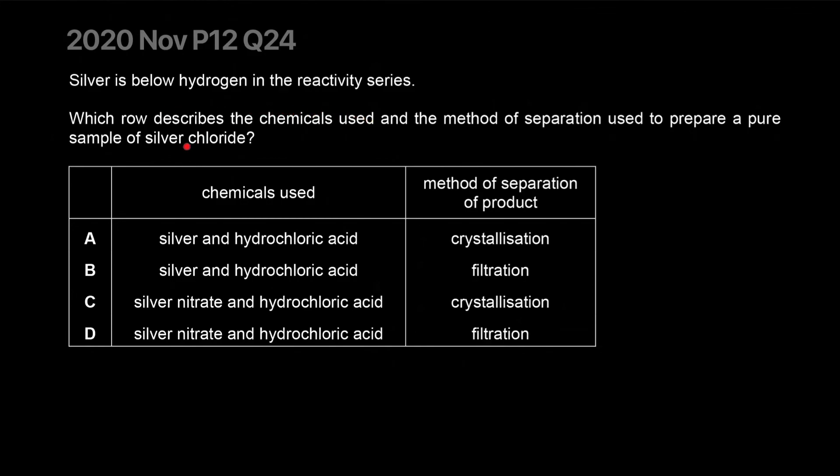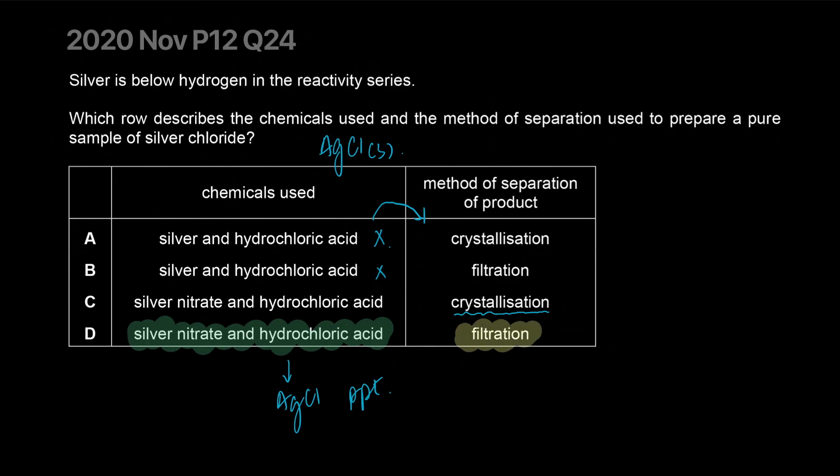Silver is below hydrogen in the reactivity series. Which row describes the chemicals used and the method of separation used to prepare a pure sample of silver chloride? Silver chloride from lab is a white precipitate. Silver and hydrochloric acid will not react because silver is below hydrogen in the reactivity series. So this reaction won't take place. Silver and hydrochloric acid - we're out. Silver nitrate and hydrochloric acid crystallization - it already forms a precipitate. It won't dissolve in water, so you can't saturate it. By default D is winning. Silver nitrate and hydrochloric acid and you filter it out because it's a precipitate. AgCl will form a precipitate and you can just filter it out. Correct answer is D.